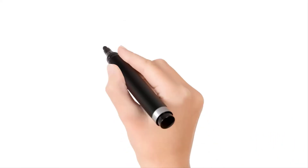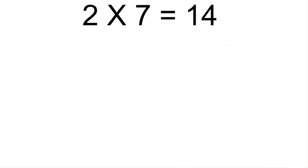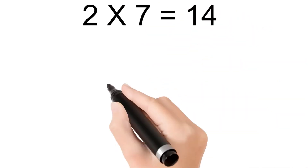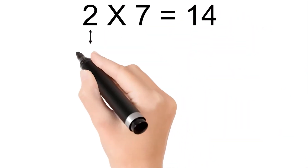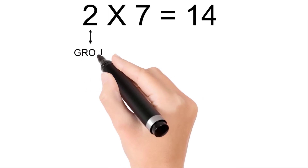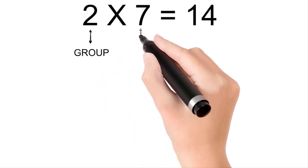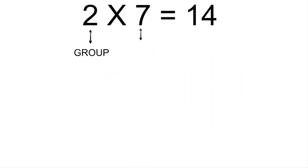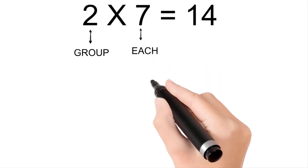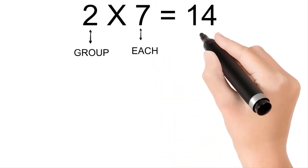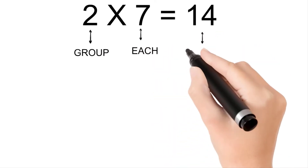Two times seven is fourteen. Two is group, seven is each, and fourteen is total.